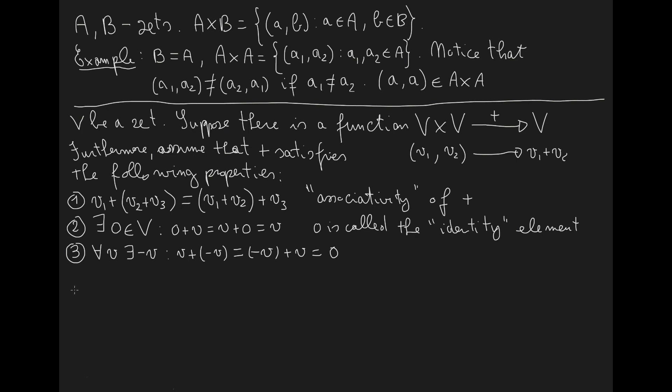Then there is an extra property which we will call four, which is the following: if we sum V1 with V2, this will always be the same as summing V2 with V1. Therefore it doesn't matter the order in which we sum two elements; the result will always be the same.